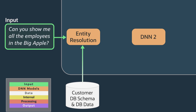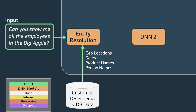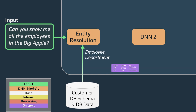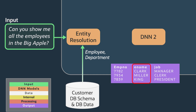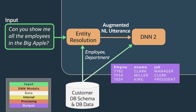We detect and follow entities through the entire processing pipeline — person names, product names, dates, geolocations, and so on. We detect them, normalize them, link them back to the database values, and track them throughout the entire parsing process. This allows us to prevent the parser from hallucinating a column or a value that doesn't actually link back to an entity the user has mentioned in their query.